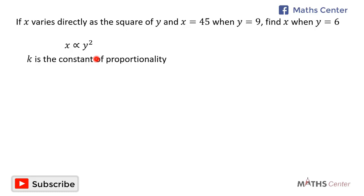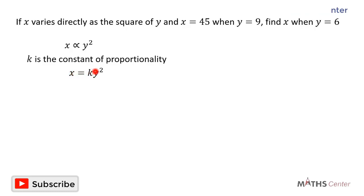Let's assume that k is the constant of proportionality. We will replace the proportional sign with an equal sign and multiply y squared by k, so we have x is equal to k times y squared. This is the equation connecting x and y.